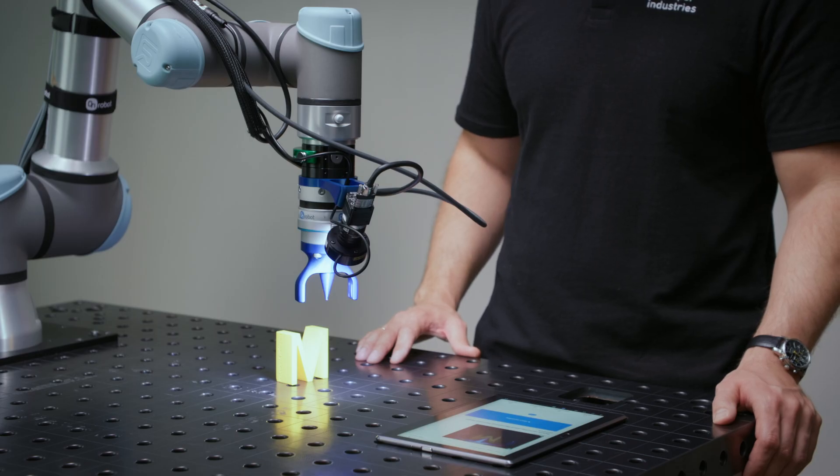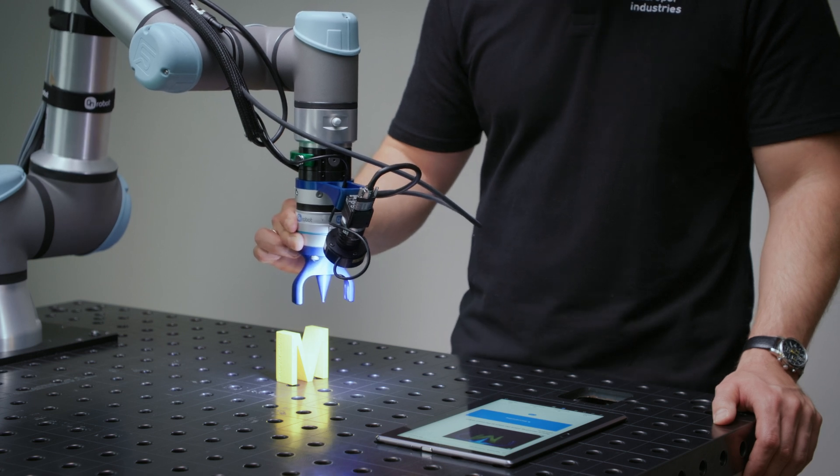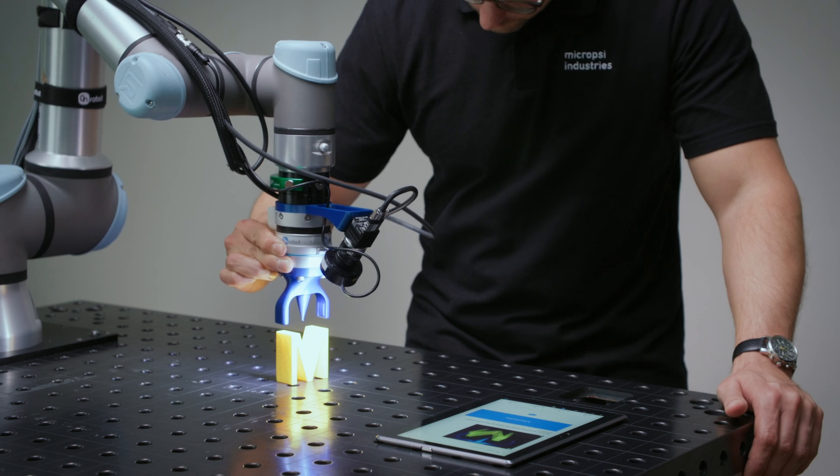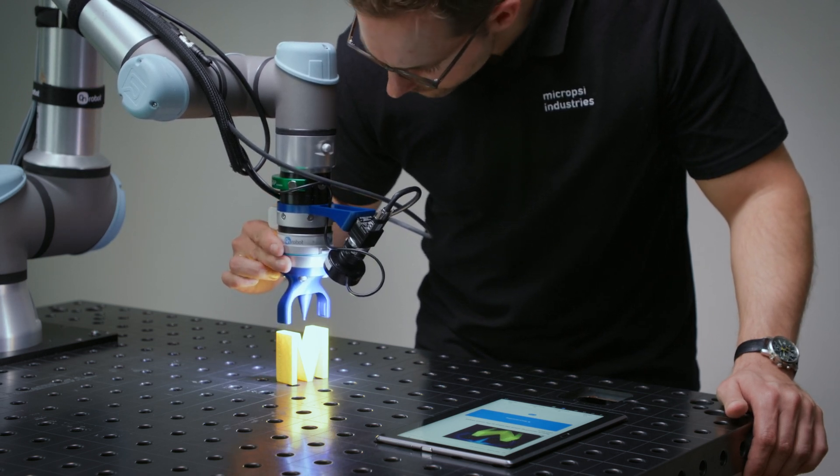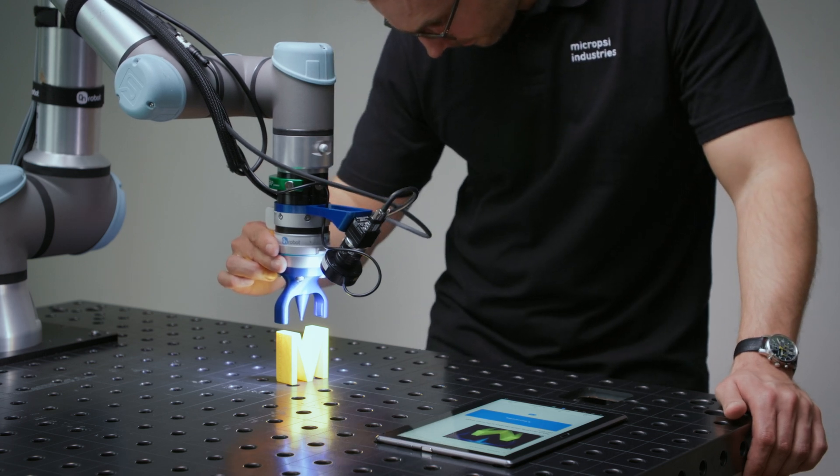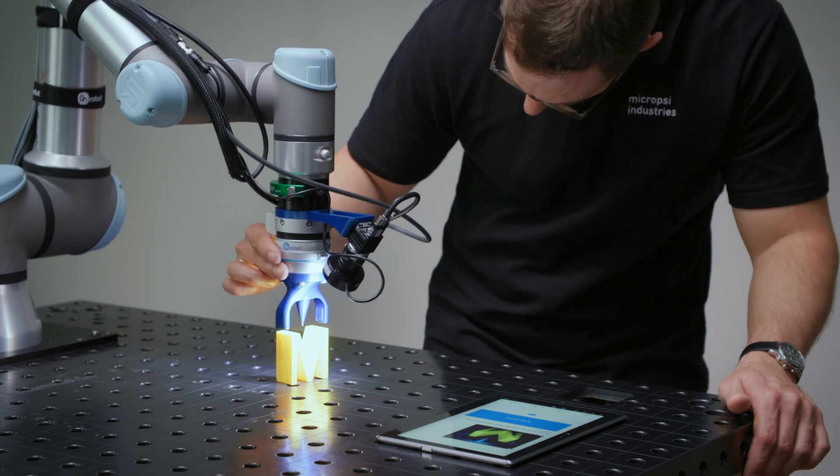For every episode you record, it's very important to have consistency in the robot's target pose. This is the pose that the robot should find its way back to during skill execution. For some skills, you can eyeball it. If you need to be super precise, consider using the robot's native controller to move the end effector to exactly the right coordinates before each episode.